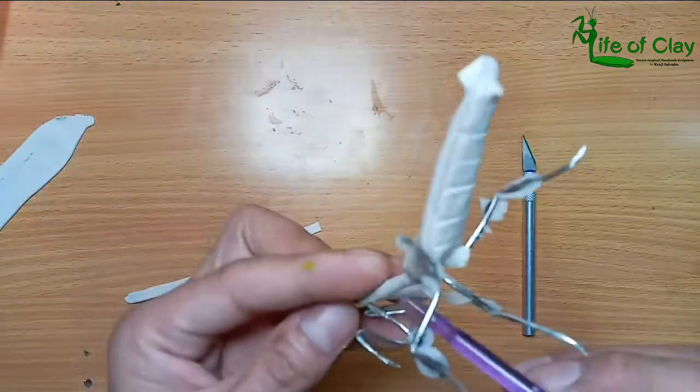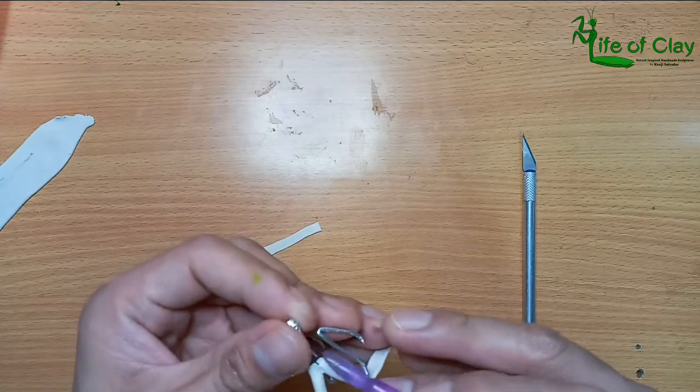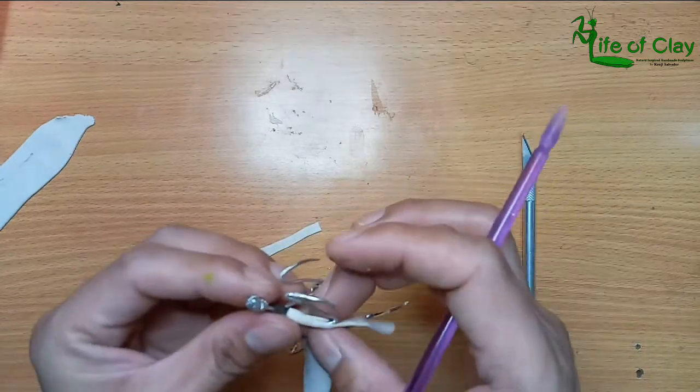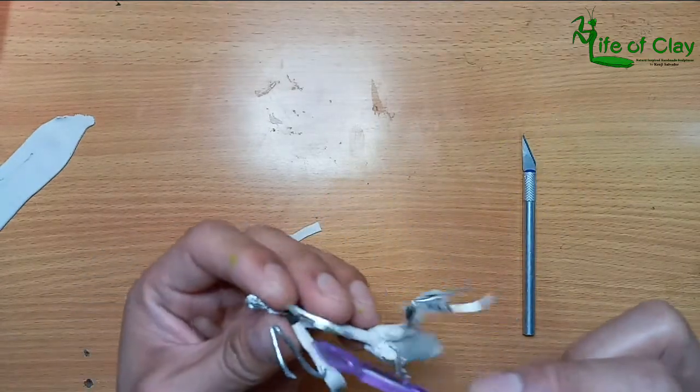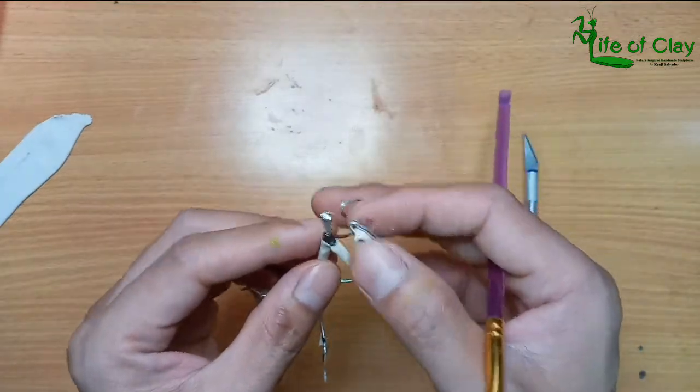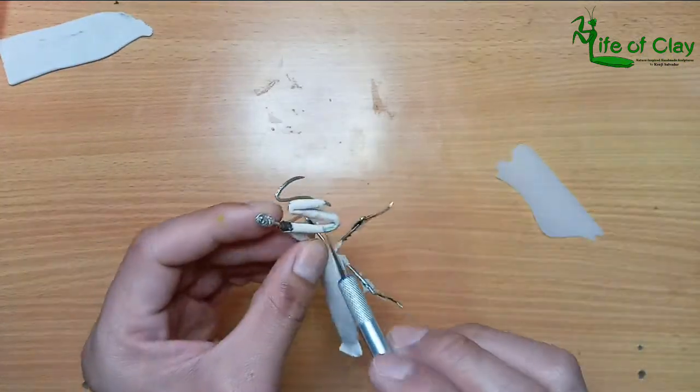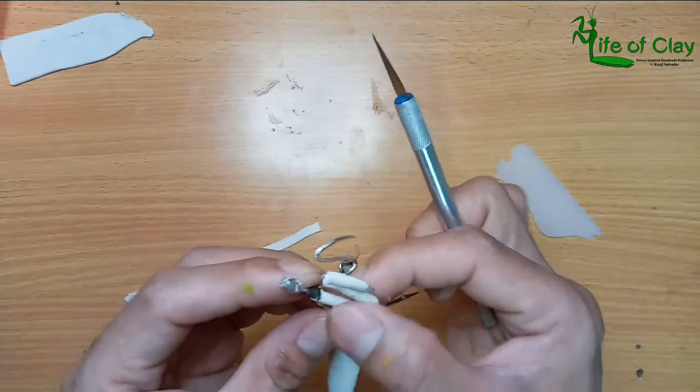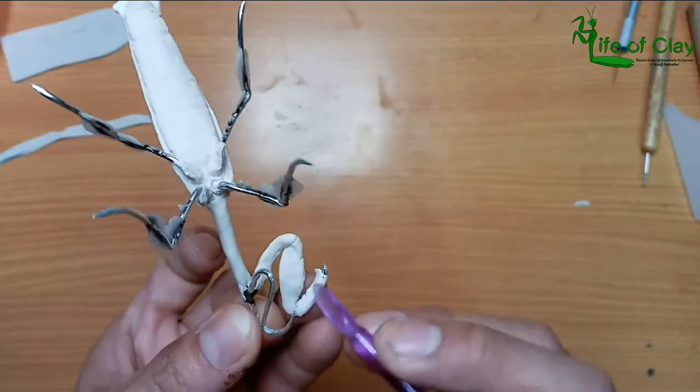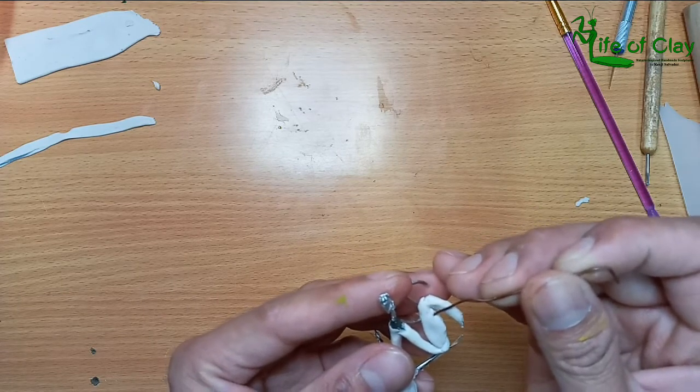And now cover the front legs with clay and start shaping them. The femur or the middle part of these legs is a bit broader than the tibia and coxa. Leaving the pointy tip of the wire exposed for the tibia spine. And now adding holes for the spines to be added later.